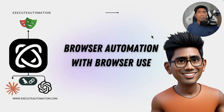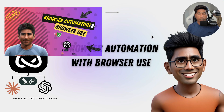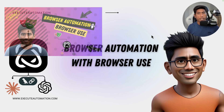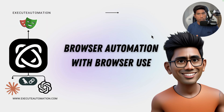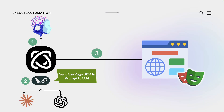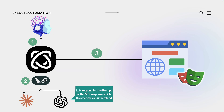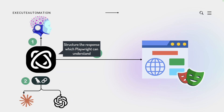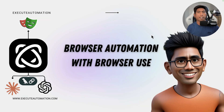Hi guys, welcome back. A couple of days ago I released a video on browser automation with browser-use, and we saw how browser-use can actually perform actions on the browser with the power of large language models. It acts like an agent which gets the user prompt, processes it through the LLM, and then sends instructions to Playwright to perform an action on the browser.